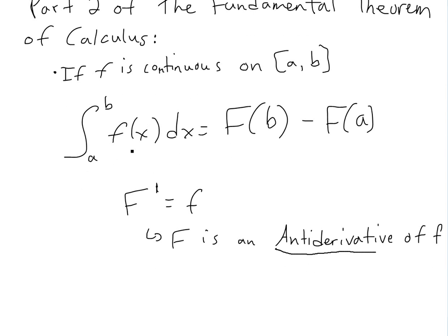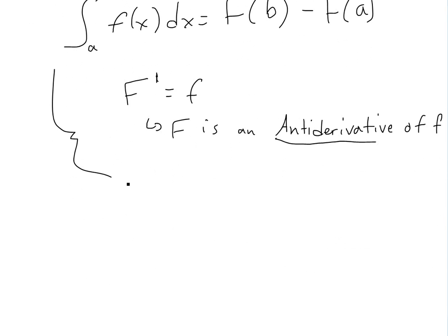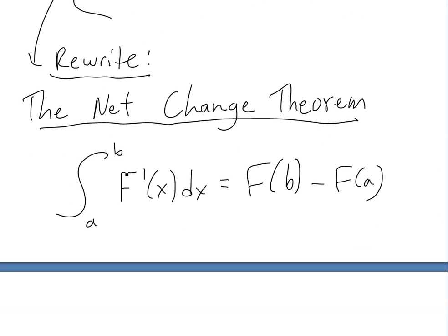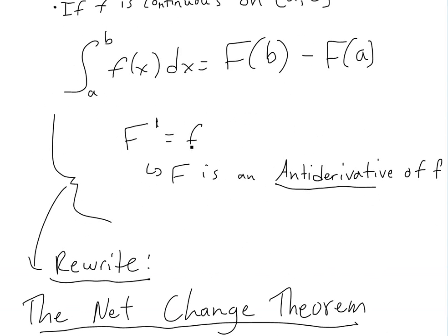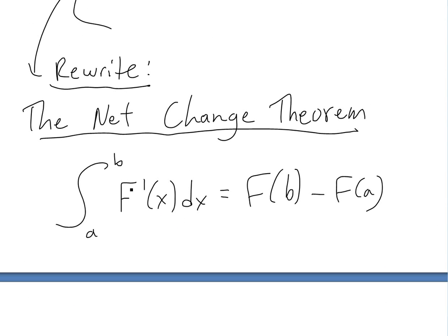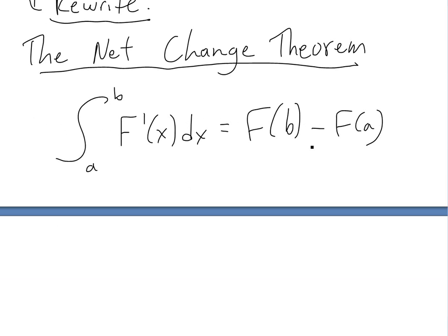We could rewrite this one in a way such that it looks like the net change theorem. I'll explain why the name is called that in a second, but all we're doing is just replacing this little f with the capital F derivative of it. So what this is saying is: the integral from a to b of the derivative of a function equals that function at b minus that function at a.